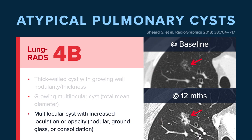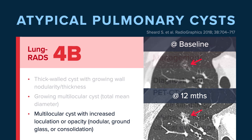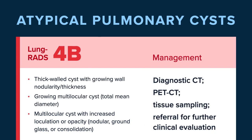Also, a multilocular cyst that develops increased loculations or changes in its density — developing a soft tissue component or ground glass component — even if the overall size hasn't changed, the development of new changed internal composition will warrant a Lung RADS IV-B classification. The management for IV-B is diagnostic CT. You can get a PET CT if there's a soft tissue component more than eight millimeters. Biopsy is an option, and we've added a new management offering: referral for further clinical evaluation. This is something you are likely already doing in your clinical practice, and we have now codified this in Lung RADS — the type of referral may vary based upon the lesion or your clinical practice patterns.